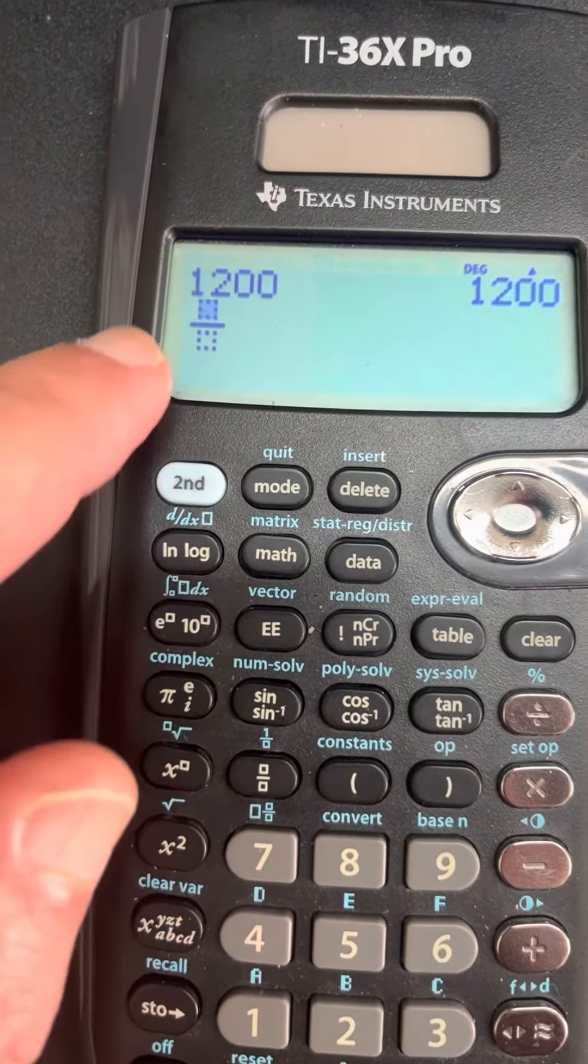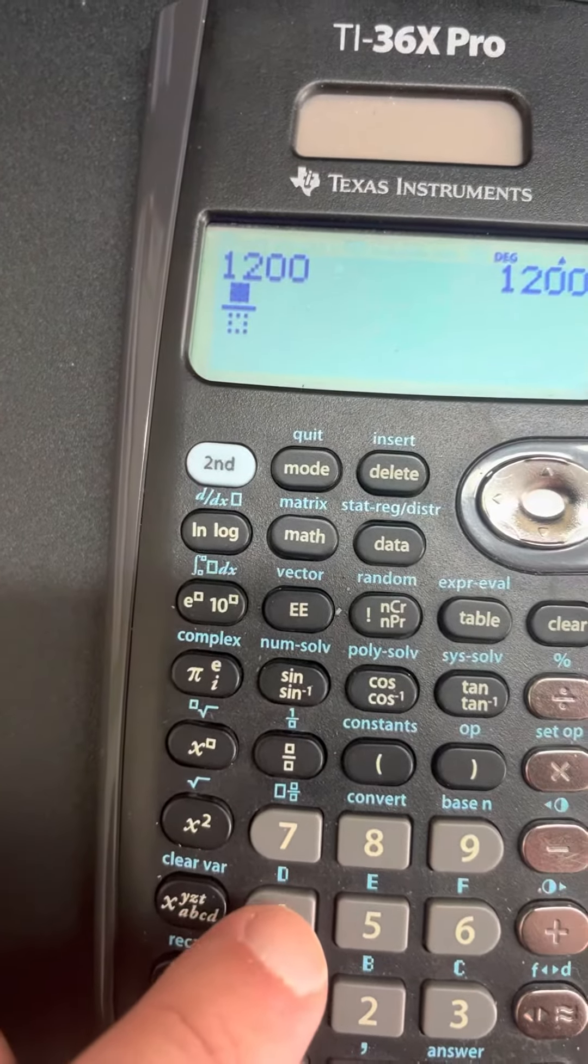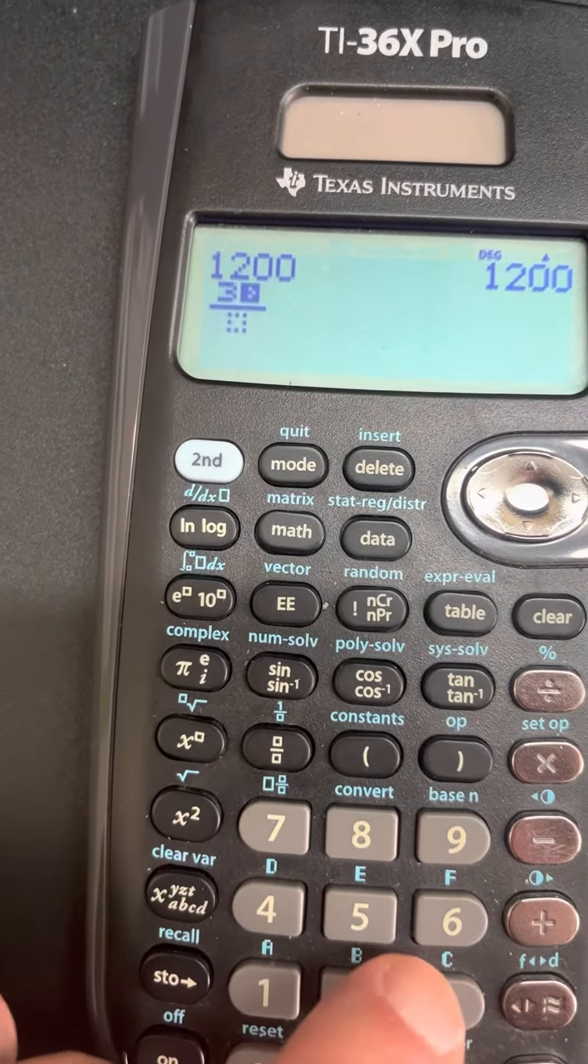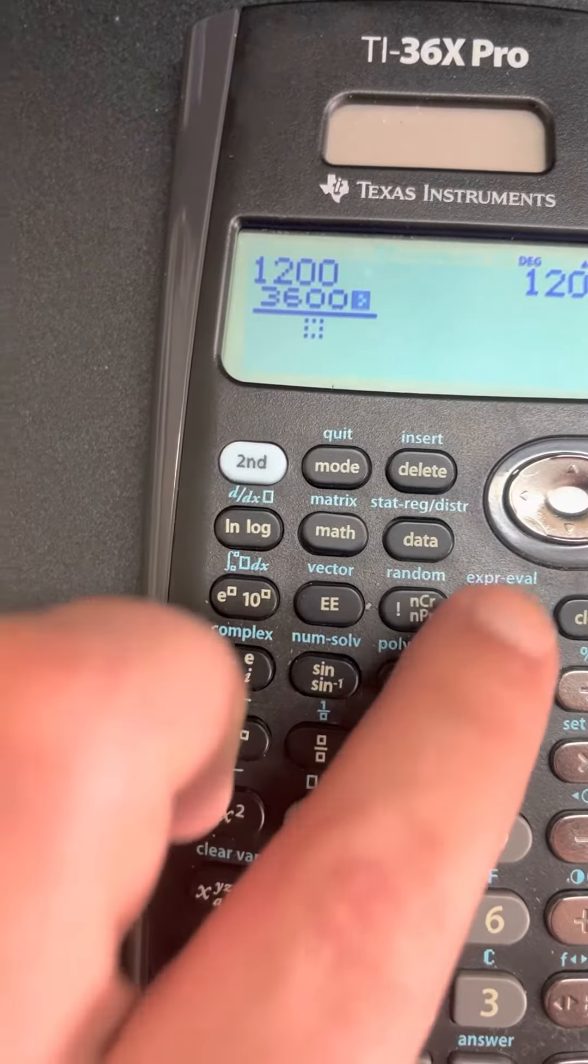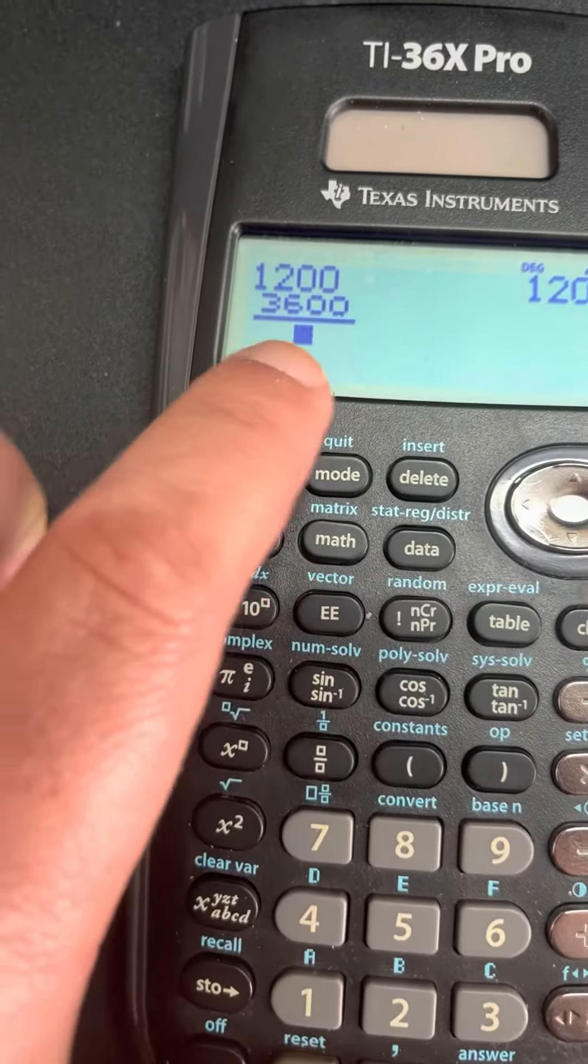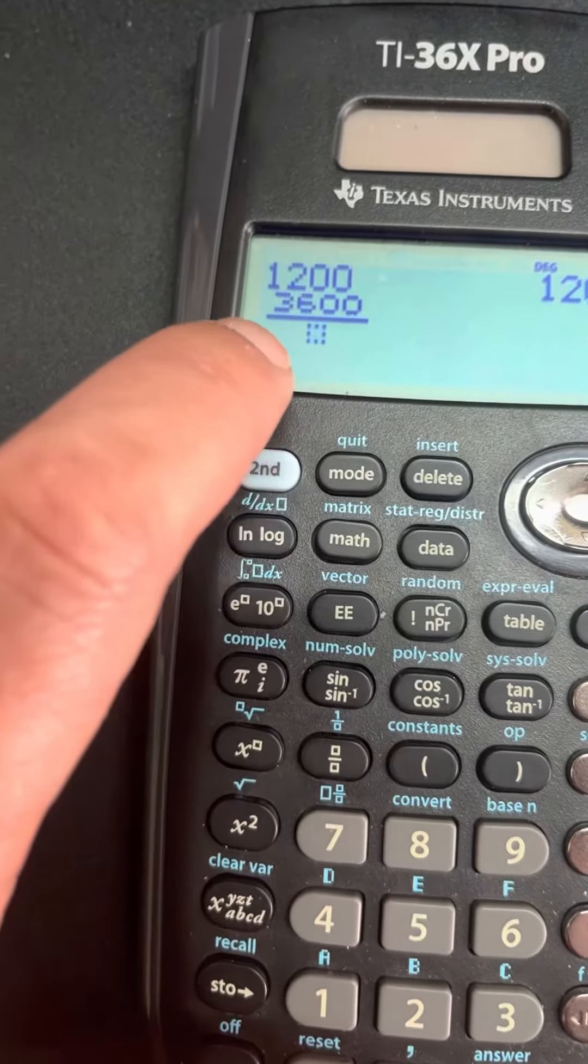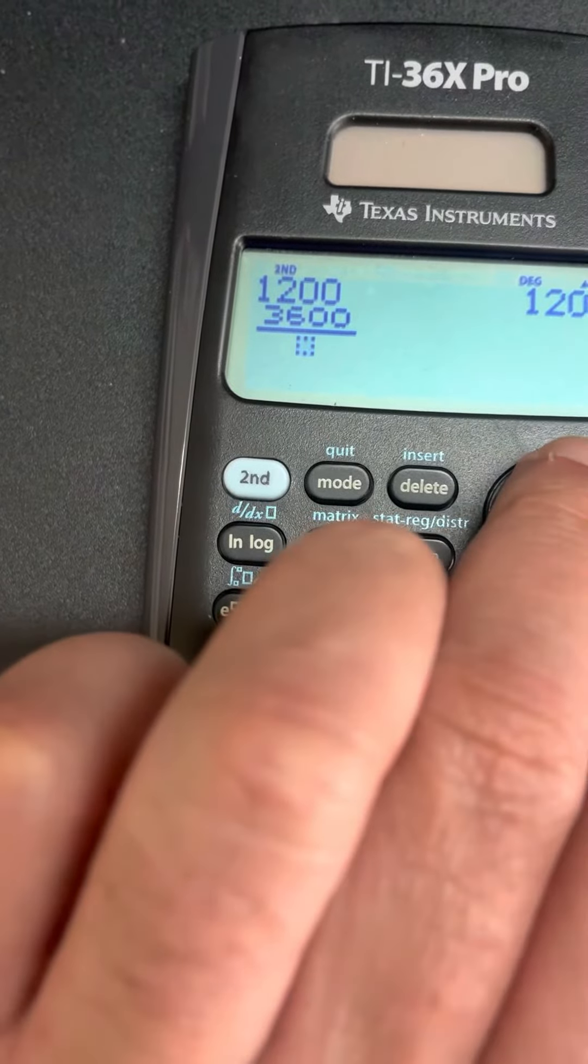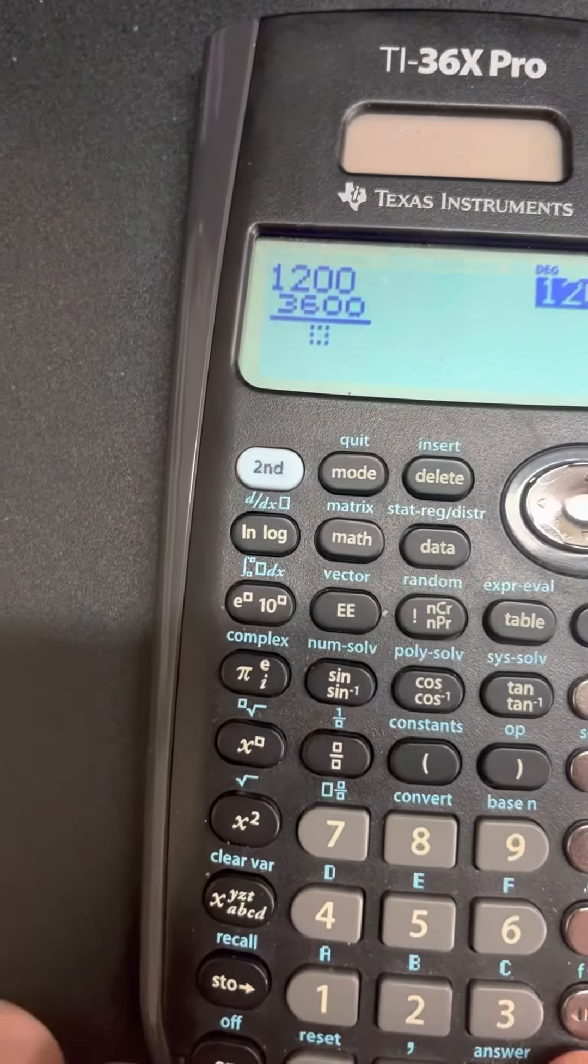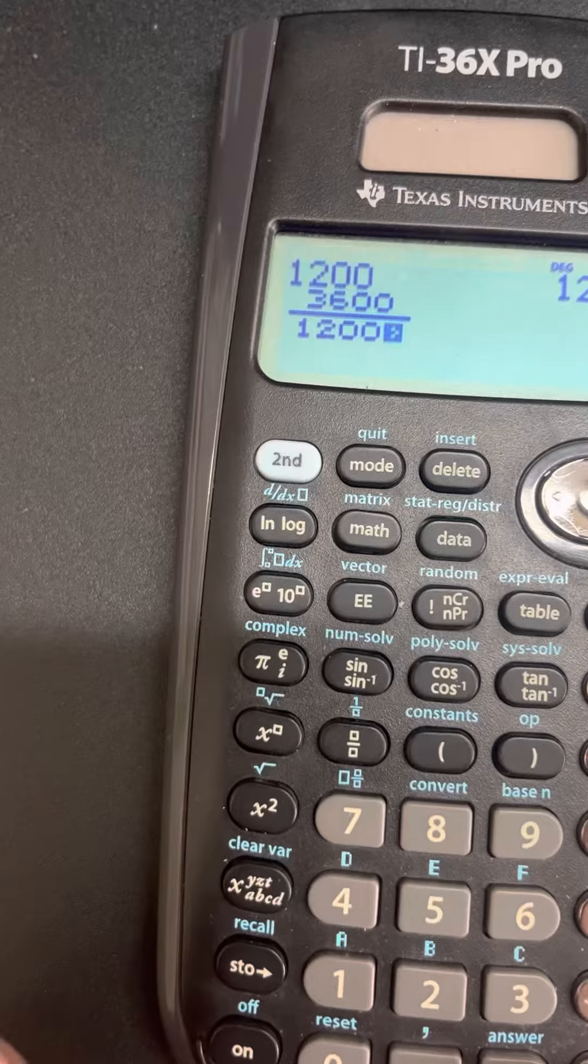Let's say I want to do this fraction. So let's see what's here: 3600. And then I want to enter this 1200 here. So basically I just hit second, then I scroll to enter, and boom, it will be there.